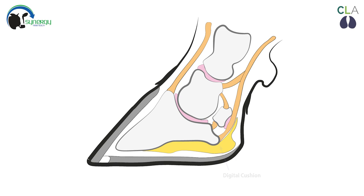The digital cushion is very important in cows and is also known as the fat pad. The digital cushion acts as a shock absorber when the cows bear weight through the foot.